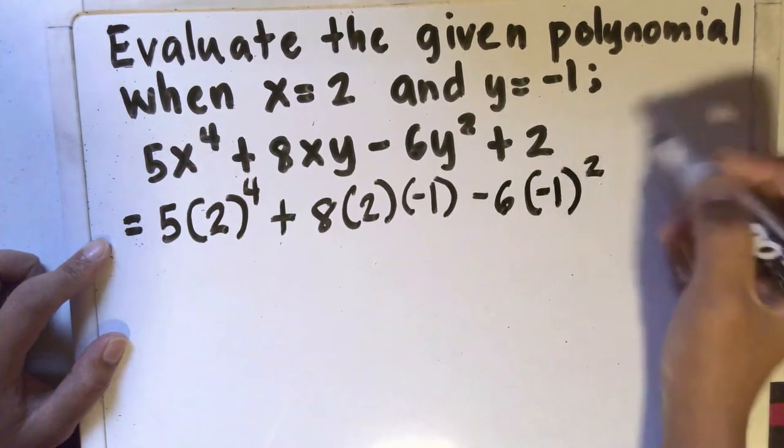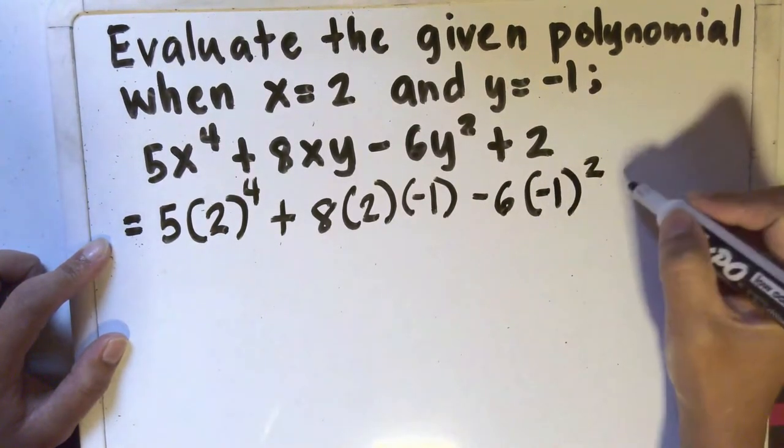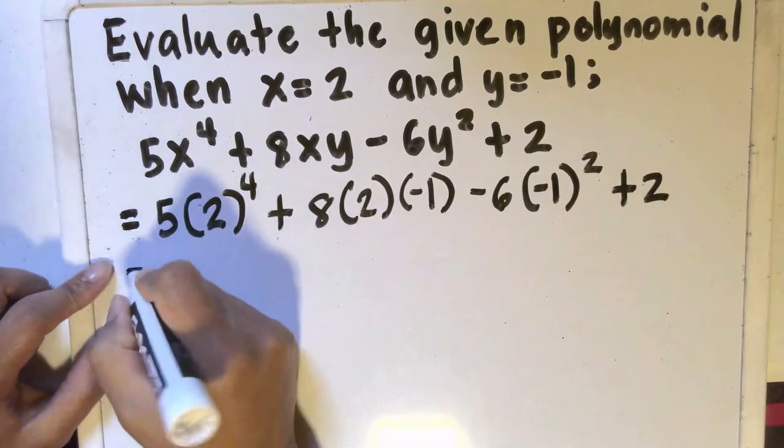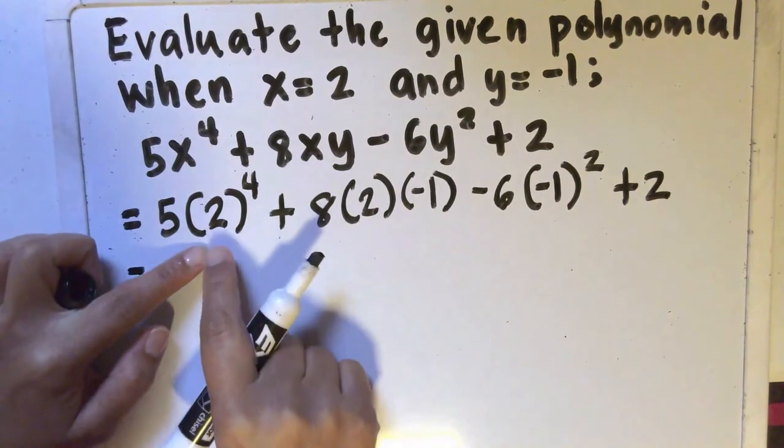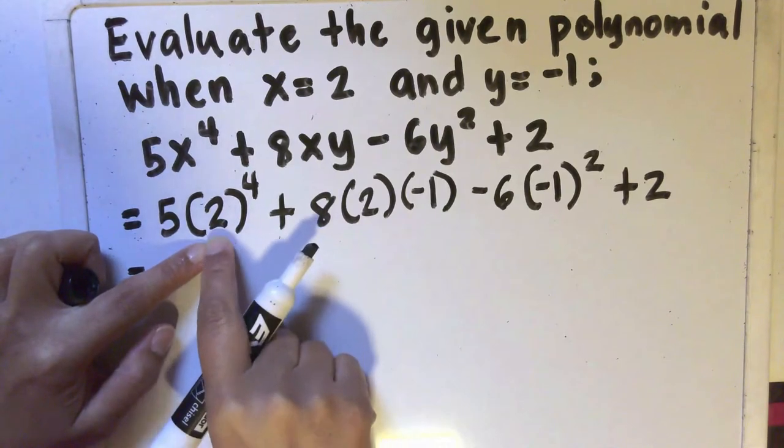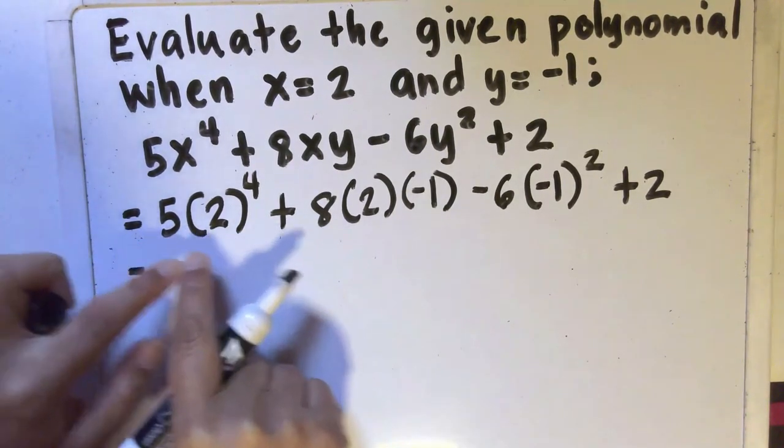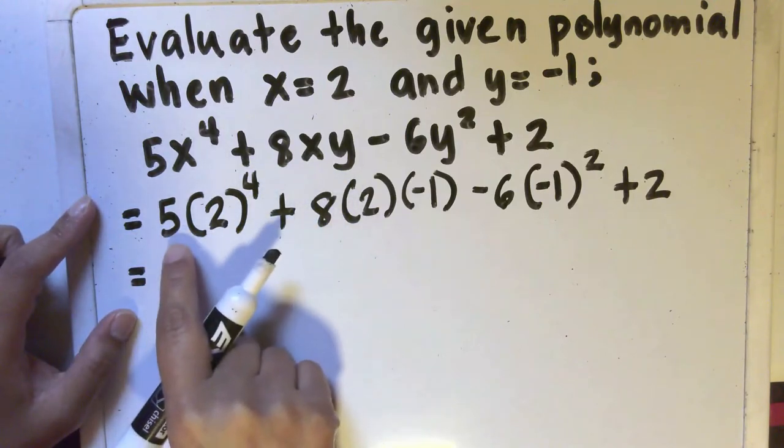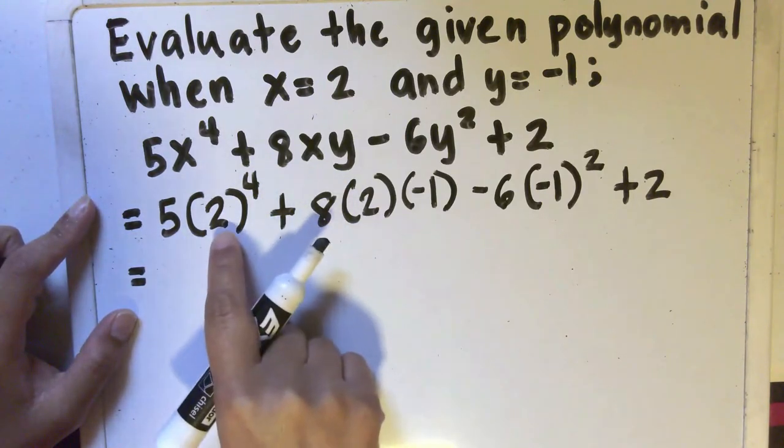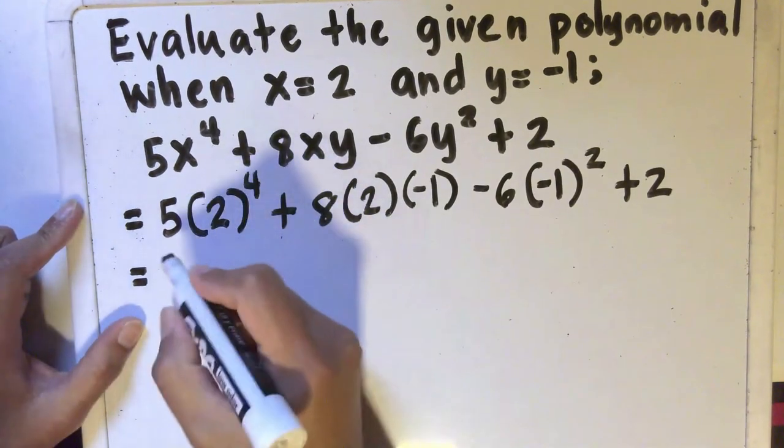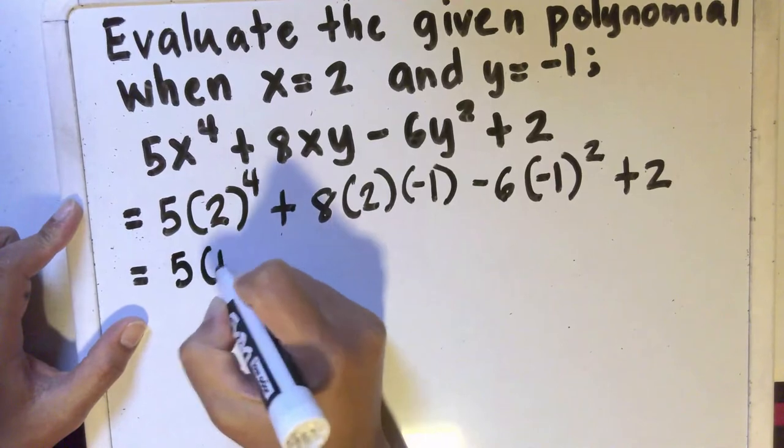In this case, negative 1 squared since y is negative 1, plus 2. We have to simplify the exponent before multiplying with any other numbers around it. So before we multiply by 5, we have to find out what is 2 raised to 4. Well, 2 raised to 4 is equal to 16, so we'll have 5 times 16.